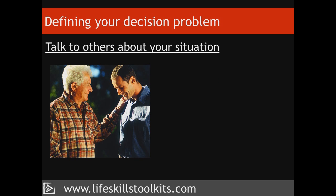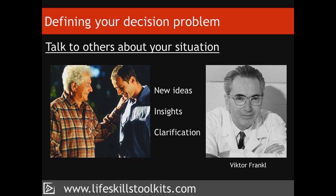Talk to others about your situation. Talking to someone whom you trust and respect about your decision problem can help provide fresh insights through the questions they ask and the clarification they seek. Even if they're unable to offer new ideas, just describing the decision problem to them will help clarify it for you. When it's not possible to talk to anyone, ask yourself how someone you admire might see the problem and go about defining it. Seeing the problem through another's eyes, adopting their persona, helps you to see the problem from a different perspective and might identify gaps in your thinking.